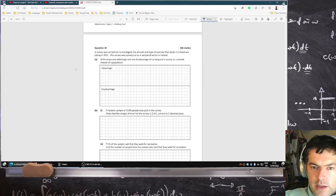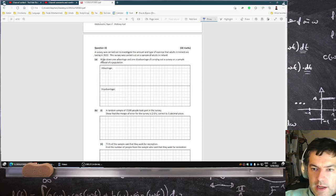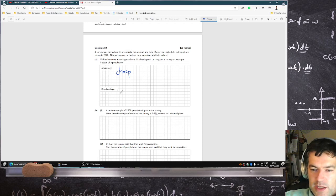Okay, got a survey question. Write down one advantage: it's cheaper to survey a sample rather than the full population. Disadvantage: it will contain error. I'm not going to write full sentences, sorry. A survey is carried out to investigate the amount of exercise.